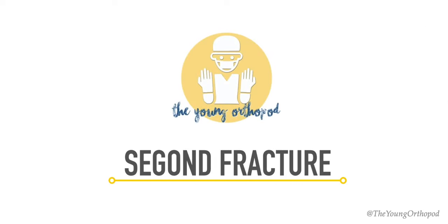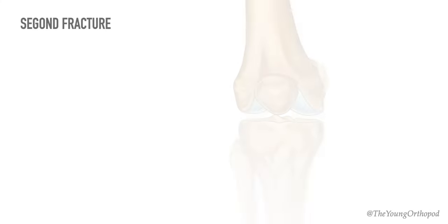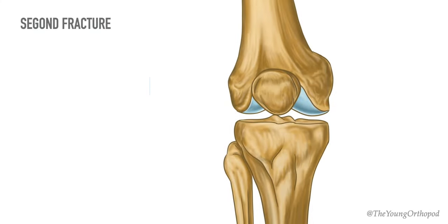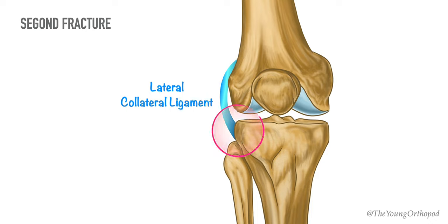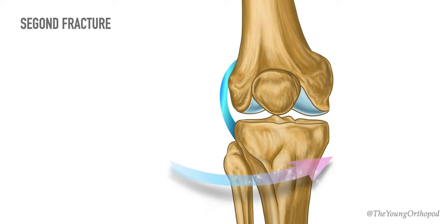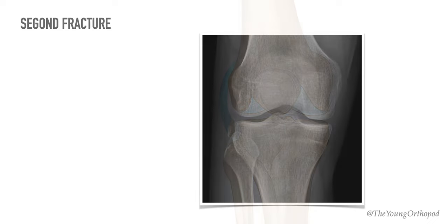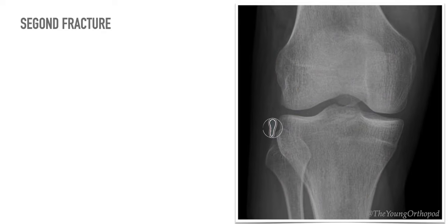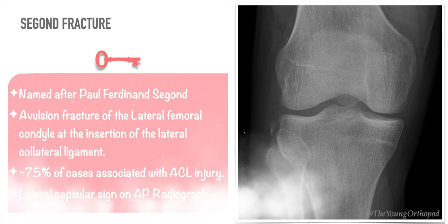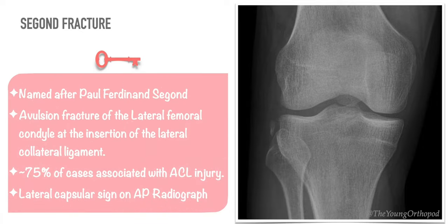The Segond fracture is a type of avulsion fracture of the lateral tibial condyle of the knee, immediately beyond the surface which articulates with the femur. The mechanism of injury is internal rotation of the knee with varus stress, leading to avulsion fracture of the lateral tibial condyle. It is frequently associated with disruption of the anterior cruciate ligament as well, in almost 75% of cases.